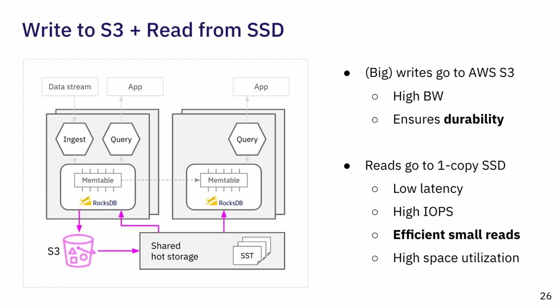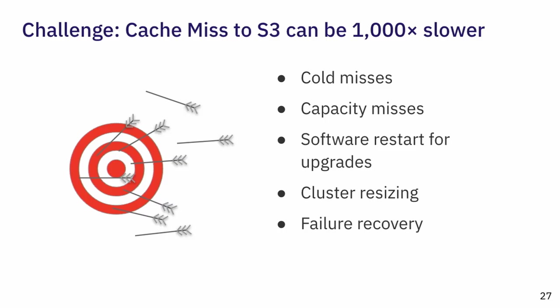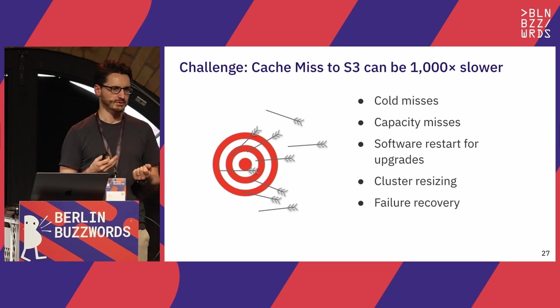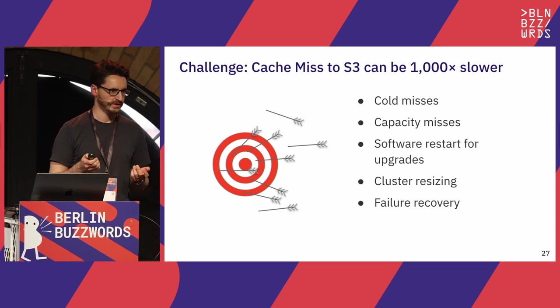What we get: from S3 we get durability and high bandwidth for writes. Reads go to one-copy SSD in the shared hot storage tier, giving us low latency, high IOPS, efficient and cheap small reads, and high space utilization. The challenge is that shared hot storage is essentially a cache over S3 — but a peculiar cache where a cache miss is 1,000 times slower: S3 latency is hundreds of milliseconds, flash latency is hundreds of microseconds. So we need to ensure we never miss the cache.